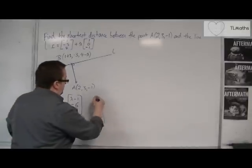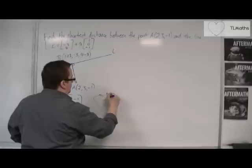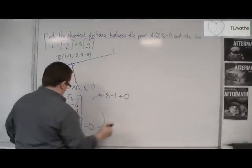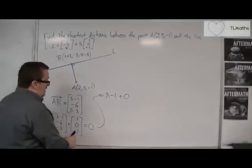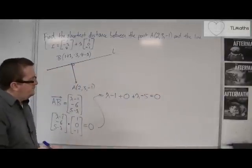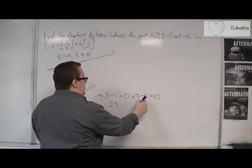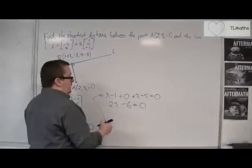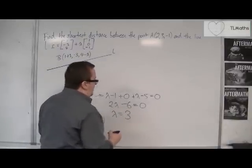So (lambda minus 1) times 1, plus (minus 6) times 0, plus (5 minus lambda) times minus 1 — which is lambda minus 5 — should equal zero. So I've got 2 lambdas, and minus 1 minus 5 gives minus 6, equals zero. Adding 6 to both sides and dividing by 2, lambda must be 3.